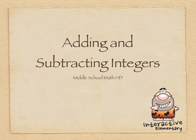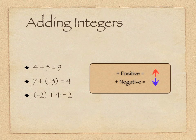This is a tutorial on adding and subtracting integers, one of the five activities within the operations module of Middle School Math HD for the iPad. First of all, let's look at some standard rules for adding integers. Anytime we add a positive, we're going to increase in value, and anytime we add a negative, we're going to decrease in value. There are some examples on the left side of the screen, but we're going to move forward into more detail.